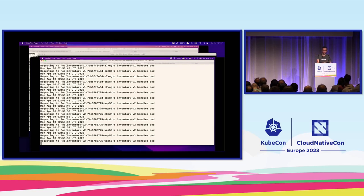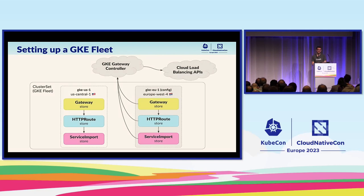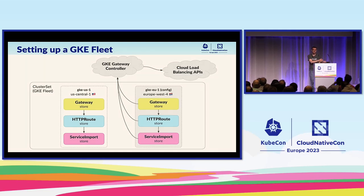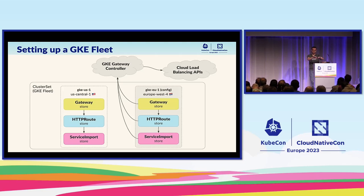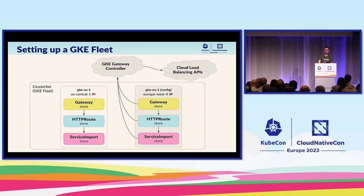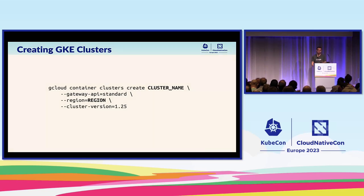That was a great demo. Now let's move right back in because I know we have limited time, and I want to show how these same APIs can be used on GKE. We're going to start with two clusters in a cluster set, or GKE fleet. One cluster will be based in the US and the other in Europe — right here in the Netherlands actually. In both cases, we're going to have the same config mirrored in both clusters: a gateway, HTTP route, and service import in all clusters. This will become important soon.